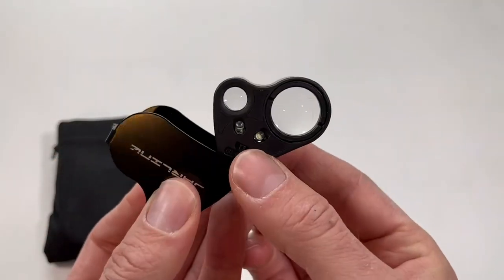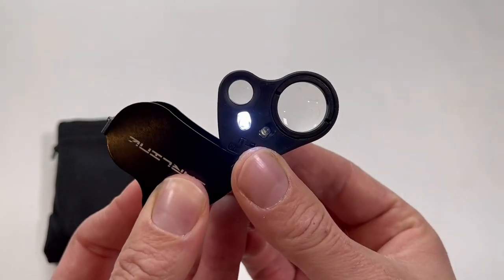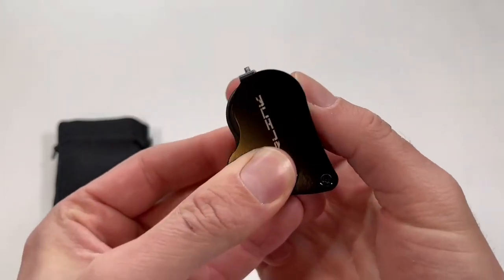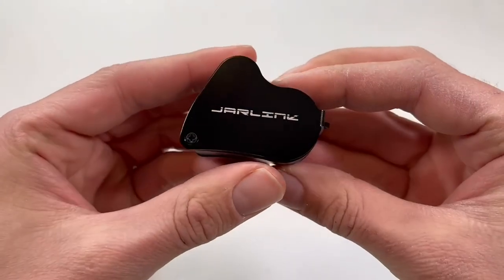We're going to be doing a vintage coin test on both of these in a little bit. You can see that this one folds out and protects the lights and the magnifiers when it is closed up.